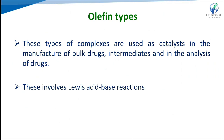Similarly, aromatic complexes are formed by the interaction of metal ions with aromatic molecules such as benzene, toluene, and xylene. If the complex is formed by a pi bond between the metal ion and aromatic molecules, it is called a pi bond complex. If the complex is formed by a sigma bond between metal ions and aromatic molecules, it is called a sigma bond complex.